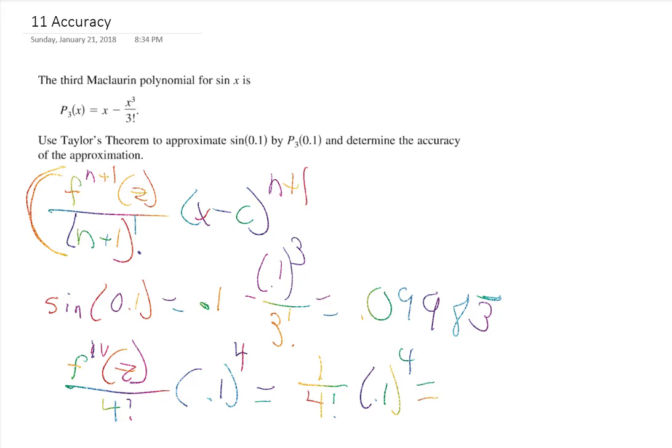Using a calculator, that error bound is 0.0000416, or 4.16 times 10 to the negative 6. Since we have 5 decimal places, our answer for sine of 0.1 should be accurate to within 5 decimal places. And indeed, a calculator gives sine of 0.1 as 0.0998334, confirming it agrees to within 5 decimal places. That's how we normally calculate the error — it tells us at most how far off our answer is.